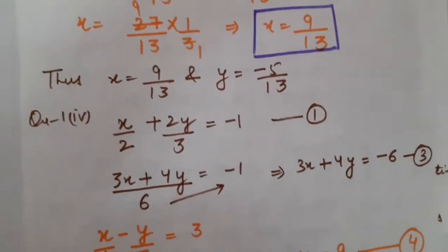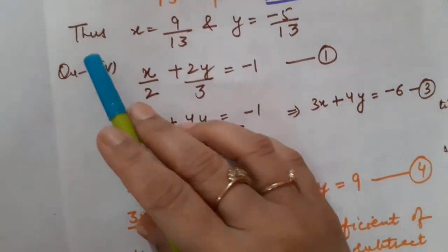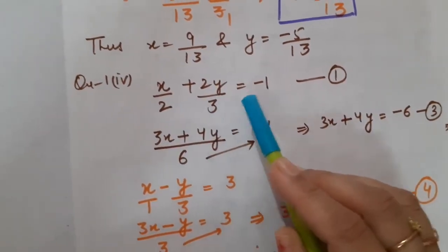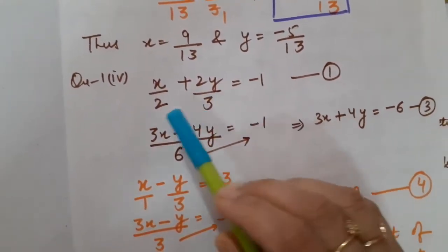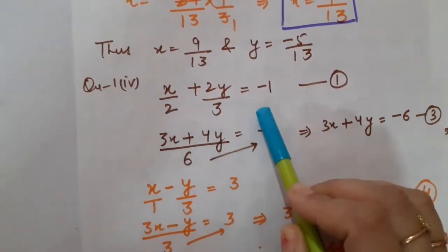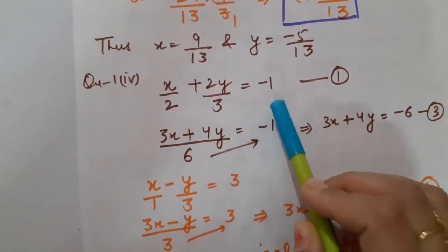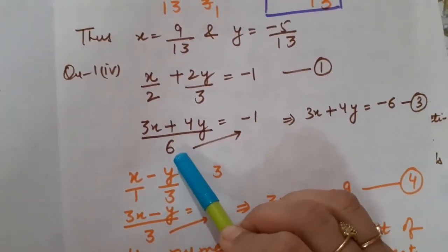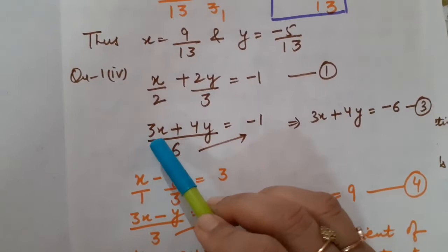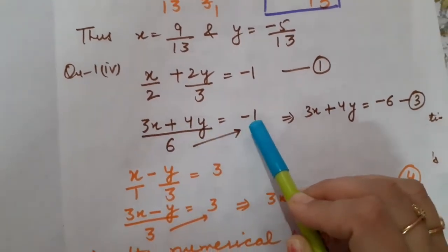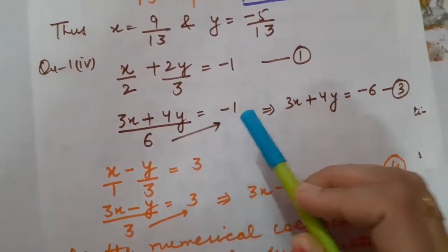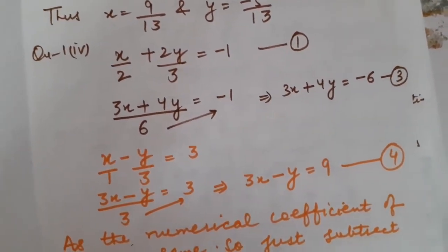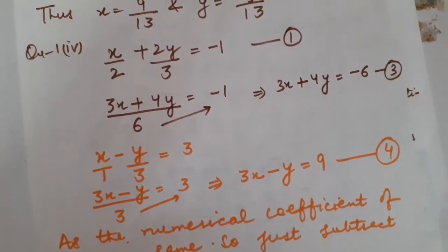Now let us take one more question from the same exercise. Question number 1, fourth part: x upon 2 plus 2y upon 3 equals minus 1. First I am going to write it in simplest form a1x plus b1y plus c1 equals 0. Taking LCM as 6, I have got 3x plus 4y equals minus 6. That would be considered as equation number 3.